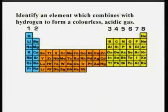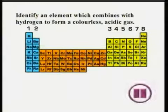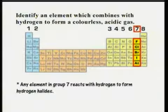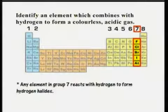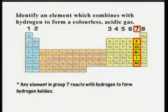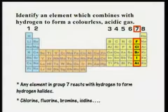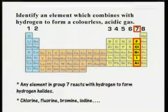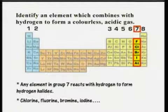Identify an element which combines with hydrogen to form a colourless acidic gas. Any element in group 7 reacts with hydrogen to form hydrogen halides, which are gases which dissolve in water to make acids. So you could have said chlorine, which reacts with hydrogen to form acidic hydrogen chloride gas, or fluorine, bromine, iodine, etc.